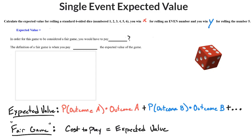This video talks about how to handle single event expected value in this specific example where you're rolling a dice.